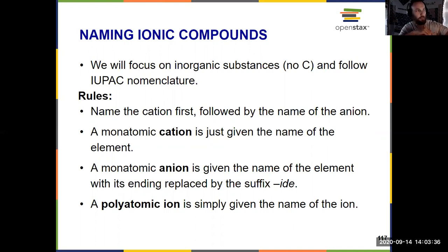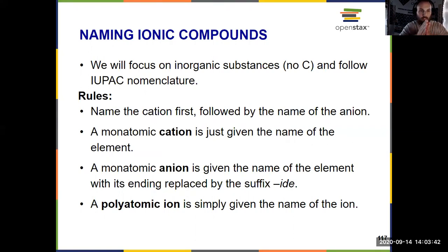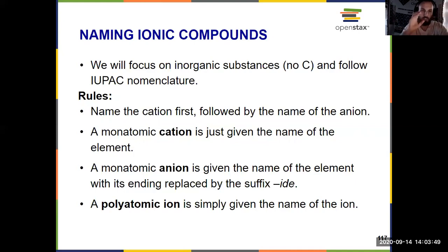How do we name a binary ionic compound? It's simple. We name the cation first — the thing that has the positive charge — and then the anion, the thing with the negative charge. We name them by just putting the cation and the anion names together.